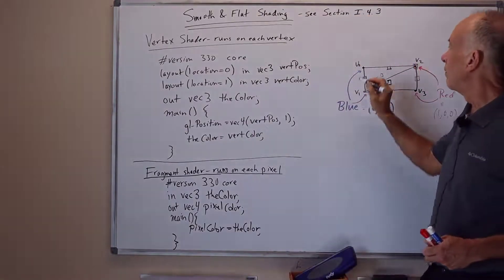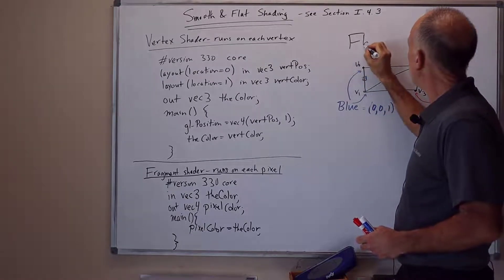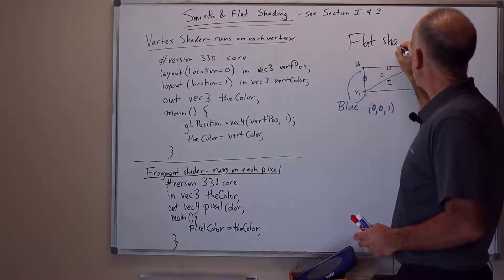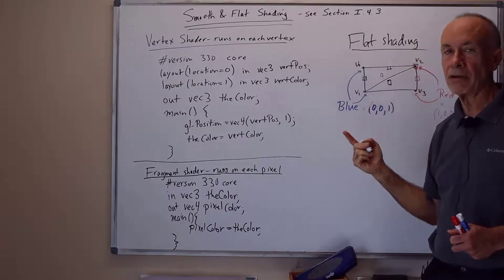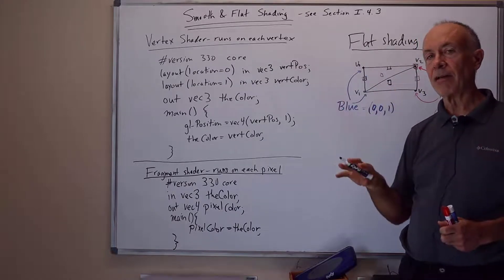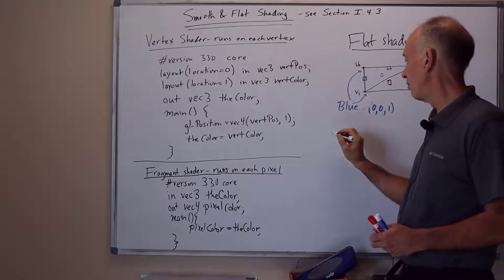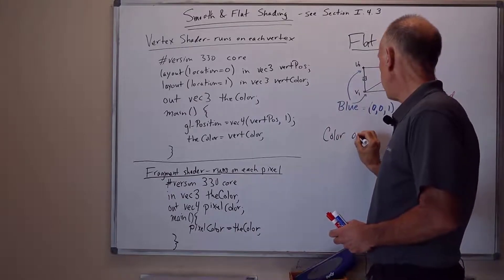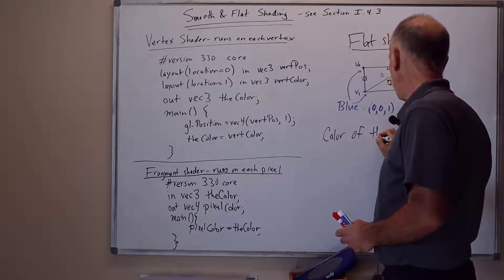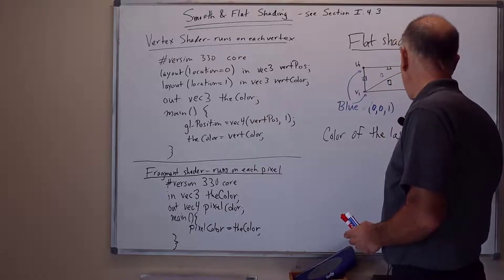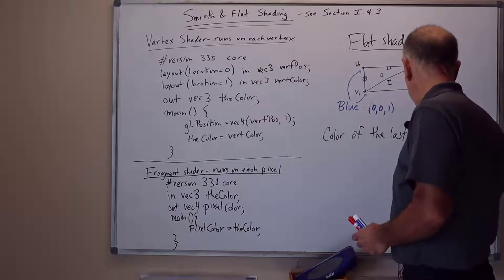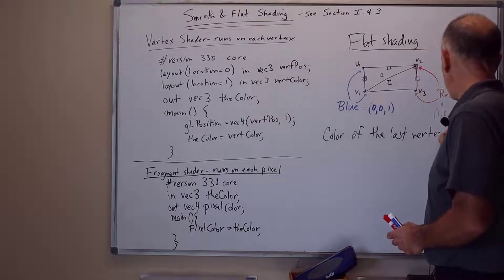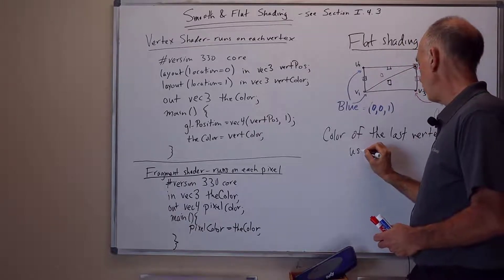Now we're going to talk about flat shading. Flat shading takes the color of one corner, one vertex of the triangle, and applies the color to the whole triangle. In fact, the last vertex is used throughout the triangle.